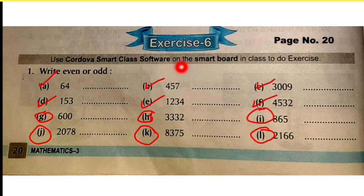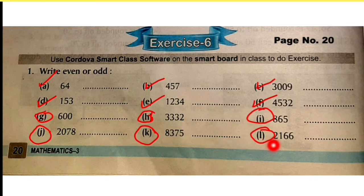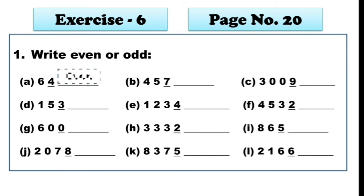Now beta, we will do exercise 6 given on page number 20. Right — even or odd. You will do parts A through F, and you will do G, H, I, J, K, and L parts yourself. Now beta, this is your A part — number is 64. 64's ones place is 4. So which type of number is it? Shabash — it is an even number.